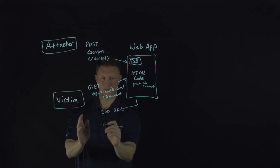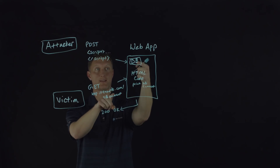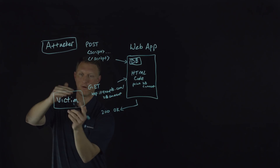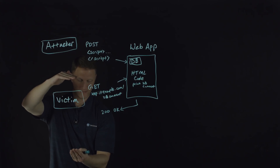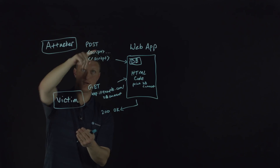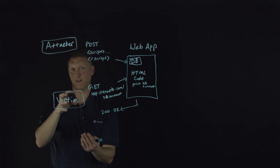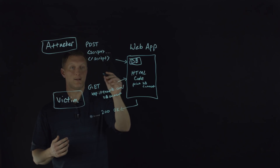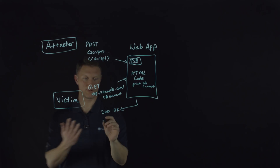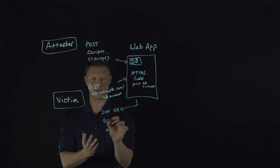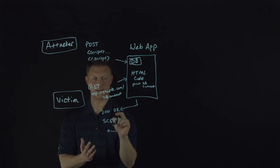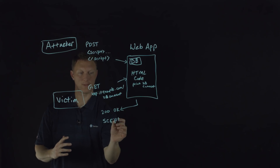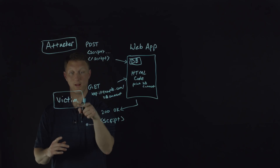The next HTML line prints the latest DB comment, and the latest DB comment is the script that the attacker put in the database. So ultimately, on the victim's browser, there is now HTML code that contains the script the attacker sent — the script he ultimately wanted the victim to execute in the browser. That script is sent as part of the OK message and gets executed on the victim's browser.